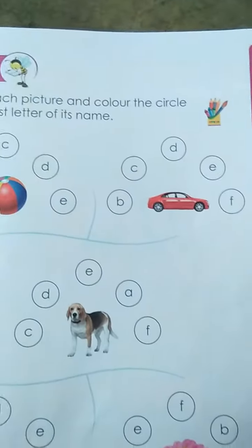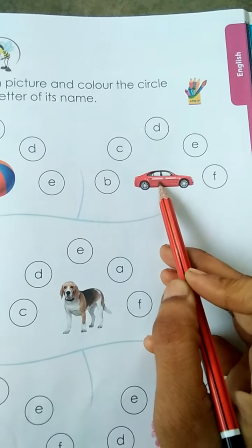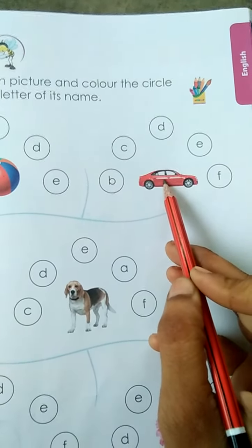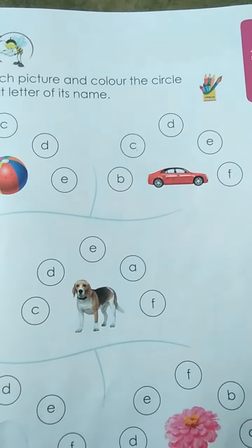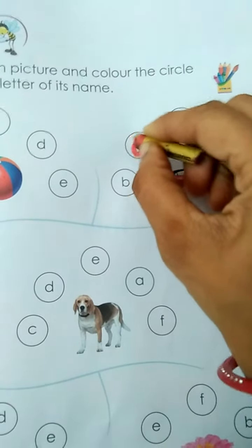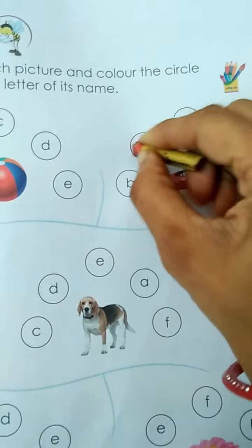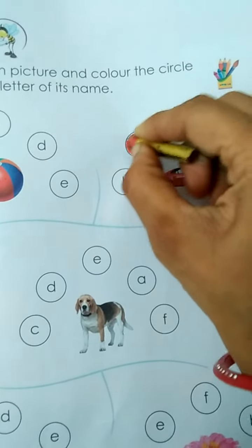Now which picture is this? Yes, very good. Car. C for car. Then you have to color in the circle of C like this.